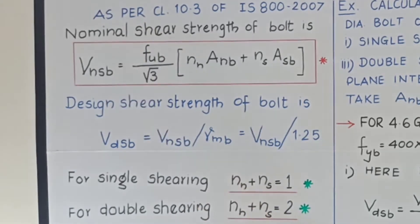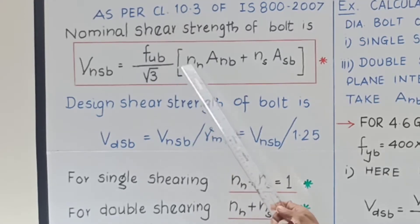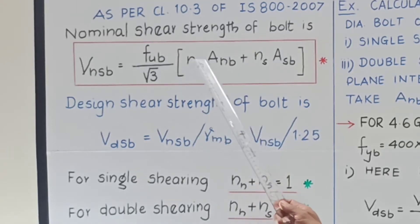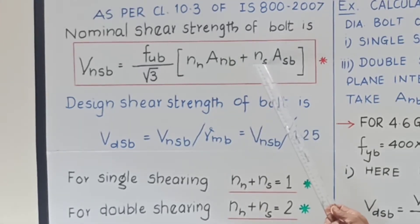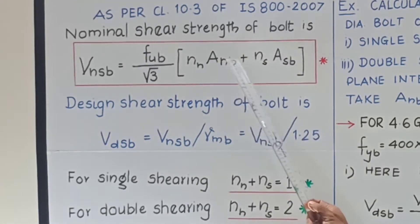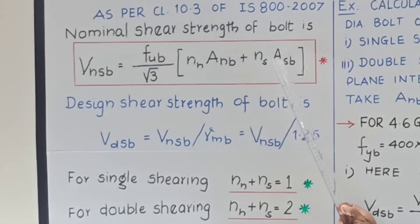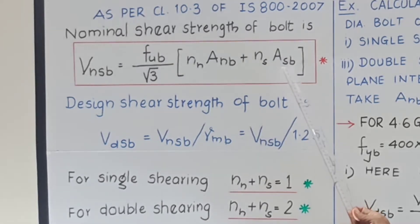V_nsb is the nominal shear strength of the bolt. f_ub is the ultimate stress in the bolt. n_n is the number of shear planes intercepting the threads. n_s is the number of shear planes which do not intercept the threads. A_nb is the net area at the root of the threads of the bolt. A_sb is the nominal shank area of the bolt, calculated as pi·d²/4, and if A_nb is not given it will be multiplied by 0.78, as we saw in the previous video.